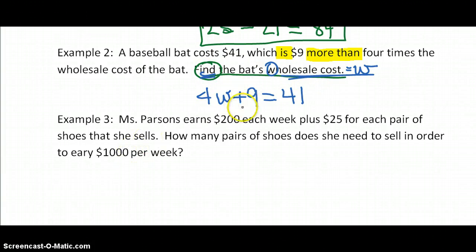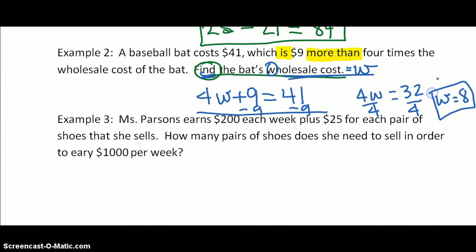So then it says to actually find the wholesale cost. So now we're going to have to do a little two-step equation solving. Subtract nine, and four W equals 41 minus nine is 32. Divide both sides by four, and I'm running out of room, but W equals eight. That's our wholesale cost, $8.